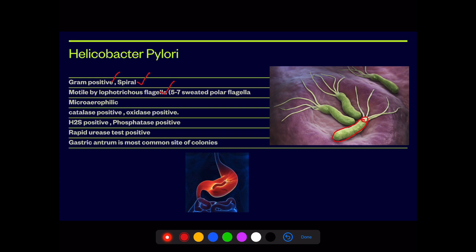The flagella contains five to seven sheathed polar flagella. It is microaerophilic, catalase positive, oxidase positive, H2S positive, phosphatase positive. And the most important question for you in case-based as well as normal direct clinical questions is rapid urease test.